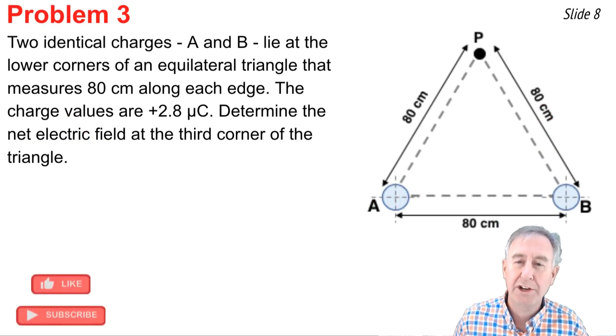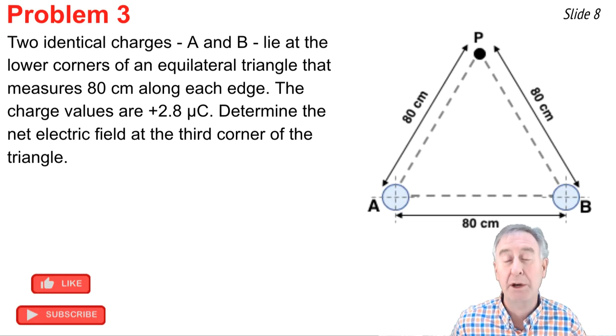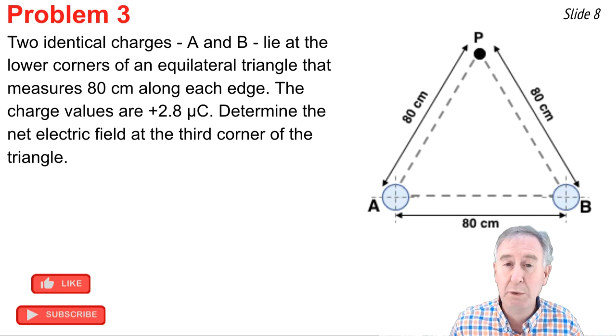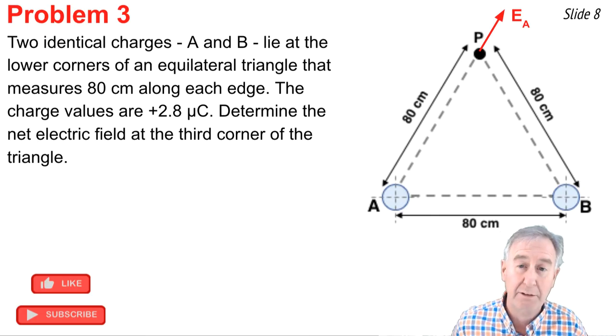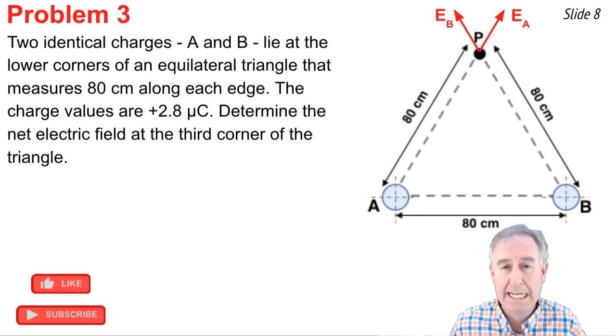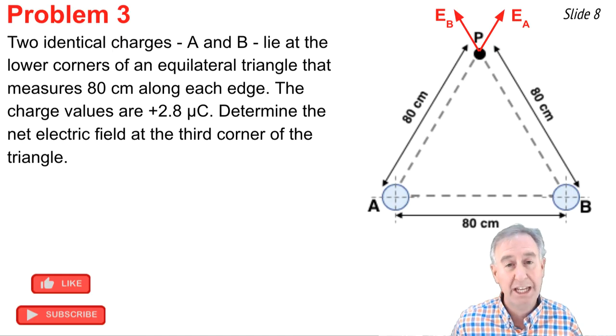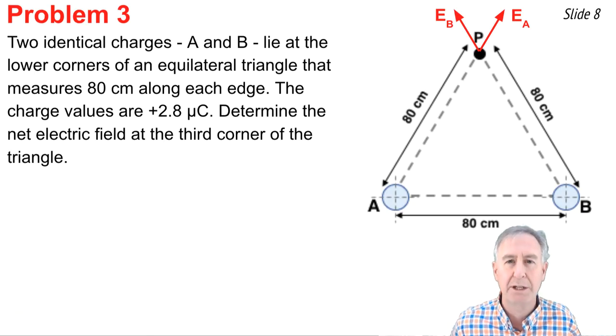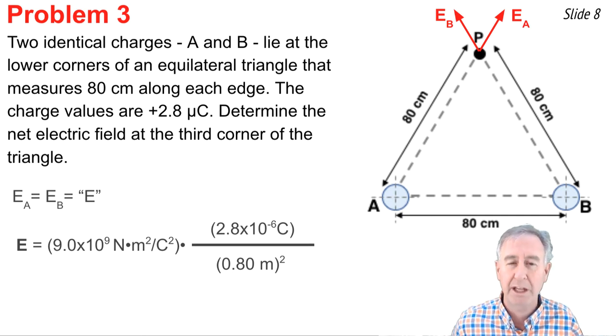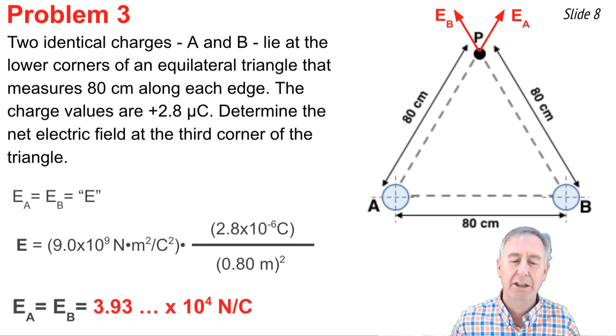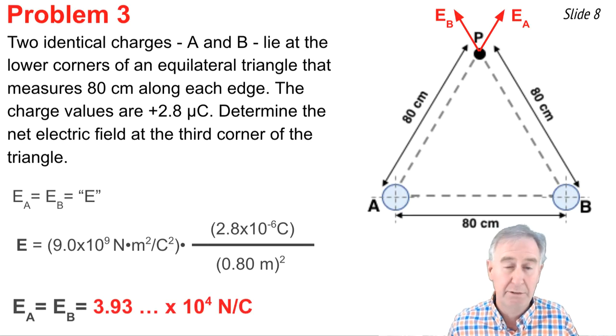In problem 3, I have two charges that occupy positions at the corners of an equilateral triangle, and I wish to calculate the net electric field at the top point P of this triangle. To determine the net electric field, I once more need to find the individual fields caused by source A and source B. Source A's electric field is going to be directed along the line connecting A and point P, and directed upwards since A is a positive source charge. The same thing can be said of the electric field created by source B. It's going to be directed along the line that connects B to P and directed upwards away from it. Now the quantity of charge on A is equal to the quantity of charge on B, and the distance of these two source charges to point P is going to be the same, 0.80 meters or 80 centimeters. And so I can state that the calculation of EA would be the same as EB, and I can easily do it by substituting in the quantity of charge on either A or B and the distance of 0.80 meters and squaring it. I end up getting 3.93 times 10 to the 4th newtons per coulomb as the electric field value of both A and B.